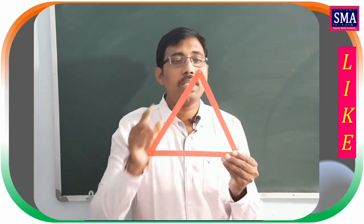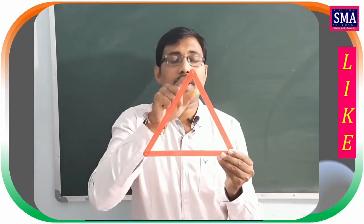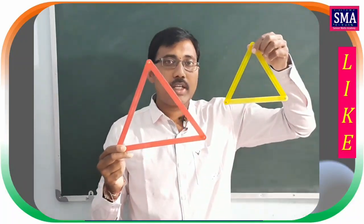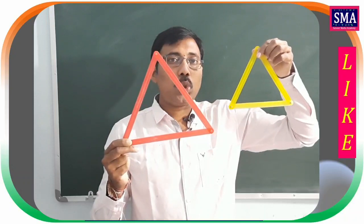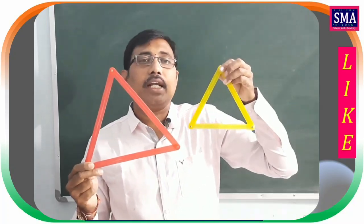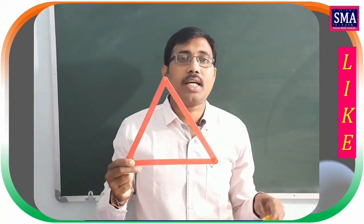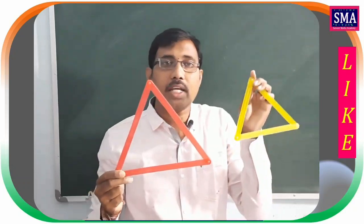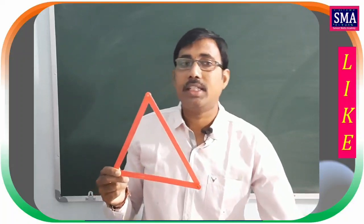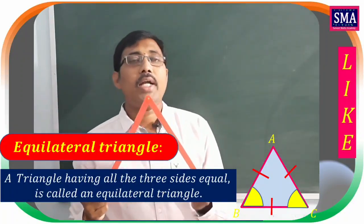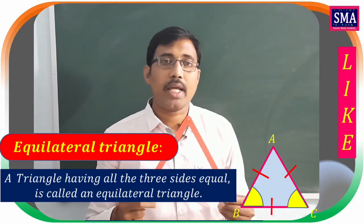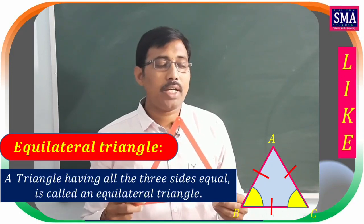Observe the figures: these two triangles have all three sides of equal length. This is called an equilateral triangle. In an equilateral triangle, all three sides have the same measurement and all three angles are also equal.